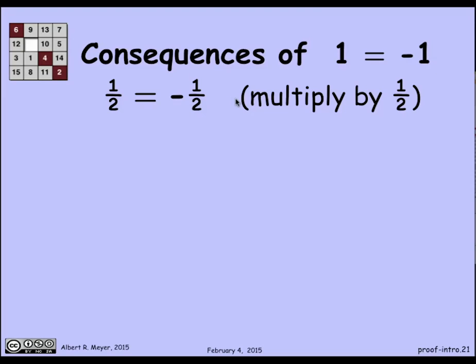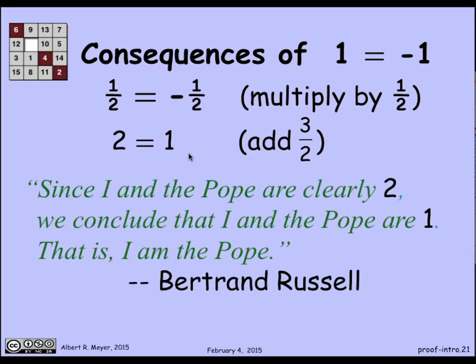Well, if I multiply both sides of an equation by the same thing, it's equal. So I can multiply both sides by 1 half, and I get 1 half is equal to minus 1 half. Now I can also add the same thing to both sides. That's a perfectly sound rule for reasoning about equalities. If I add 3 halves to both sides, I've turned 1 equals minus 1 into 2 is equal to 1. Now I'm in great shape to prove all kinds of things. Here's a famous one.